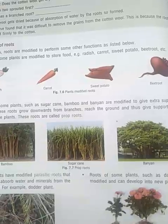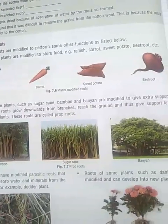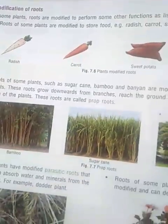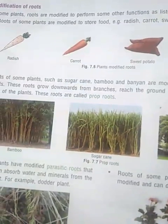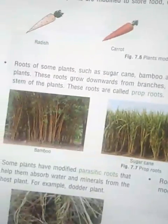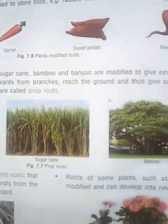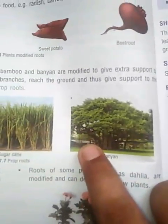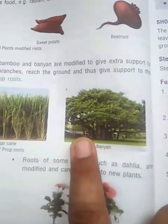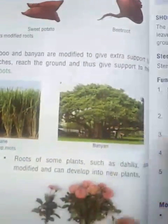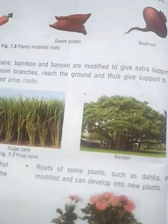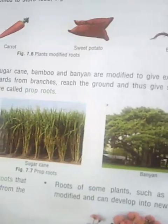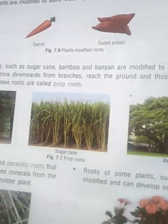These support roots grow downward from the branches, reach the ground, and keep the stem upright. These are called prop roots. For example, bamboo and sugarcane have such roots. In the banyan tree, when the tree is very old, it grows advanced prop roots which support the plant body and hold the weight of the branches.